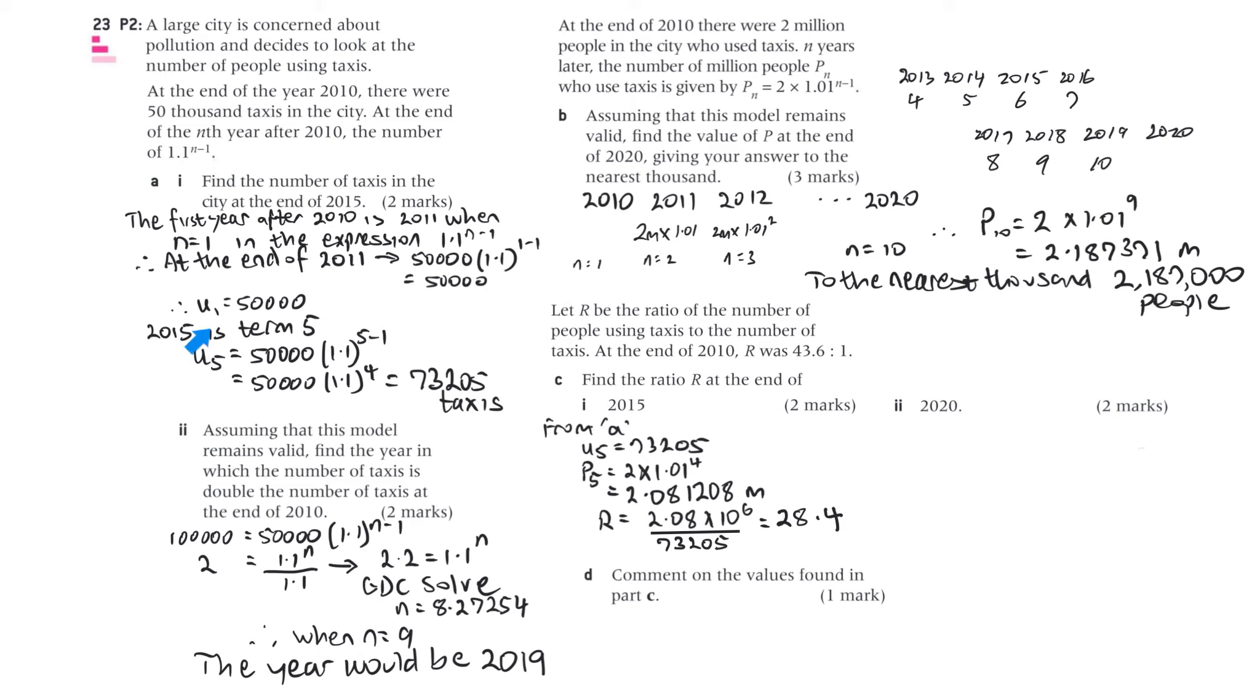Okay, so from part A, we know that the number of taxis is 73,205. To find out what the population is, though, we're going to use 5, because we said that the population in 2015 is going to be at the end of 2014, so that would be 5. So we put a 5 there. That's 5 minus 1, and we get 2.08128 million, and the ratio is 28.4.